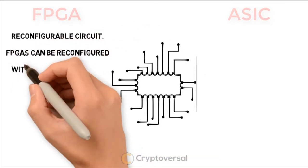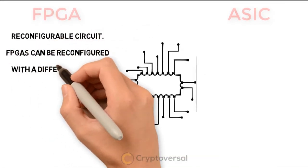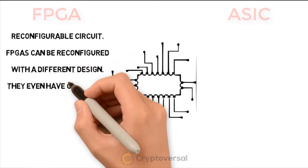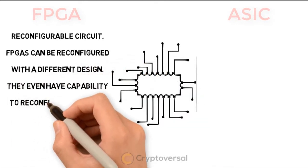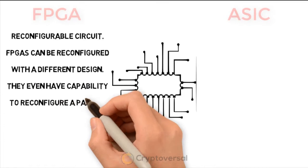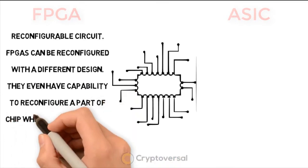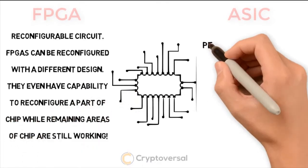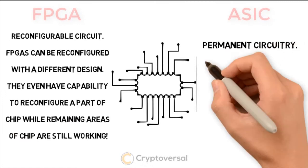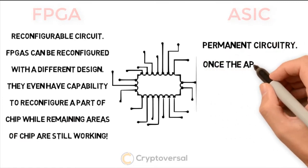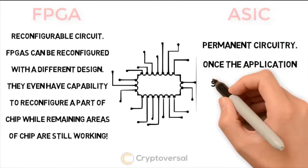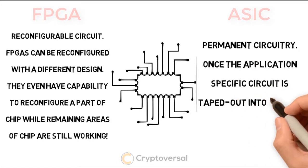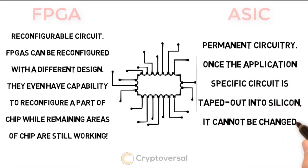FPGA is a reconfigurable circuit. FPGAs can be reconfigured with a different design. They even have the capability of reconfiguring a part of the chip while remaining areas of the chip are still working. ASIC is permanent circuitry. Once the application-specific circuit is taped out into silicon, it cannot be changed.